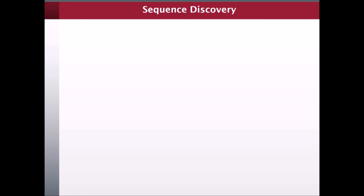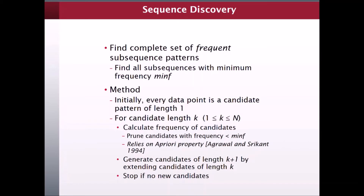Now let's consider a second approach to activity discovery. In this one, instead of partitioning all of our data points into separate clusters, we're actually going to grow sequences of data points. The method for finding these sequences is to start by considering every data point as a candidate pattern of length one. In our case, the data points represent the feature vectors extracted from a window of sensor data. These windows could be overlapping or not overlapping. Once we have these initial candidates, then we go through steps that repeat until we meet some kind of a stopping criteria.